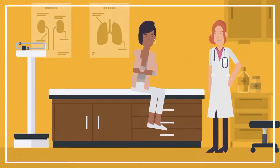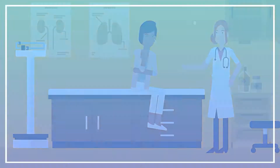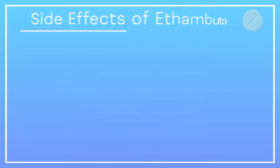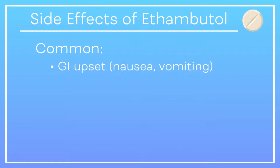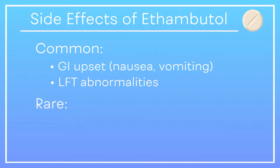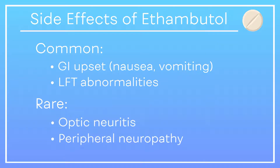Ethambutol can commonly cause GI upset, nausea, vomiting, and liver function test (LFT) abnormalities. Rarely, ethambutol can cause optic neuritis and peripheral neuropathy.